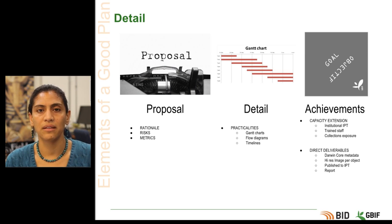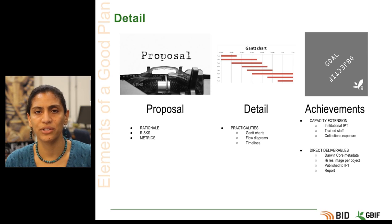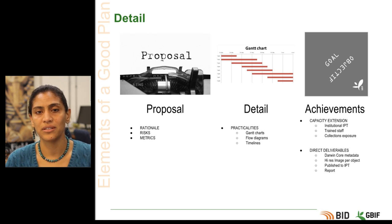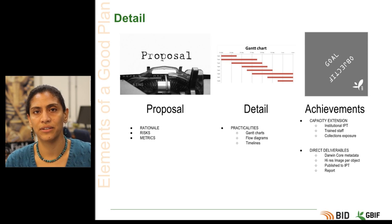The second thing to consider is detail. The planning document is the place to include as much information about the practical day-to-day workings of your project as possible. The activities of each stakeholder should be covered in this document. Gantt charts, flow diagrams and timelines are all good visual tools for helping you present these activities.